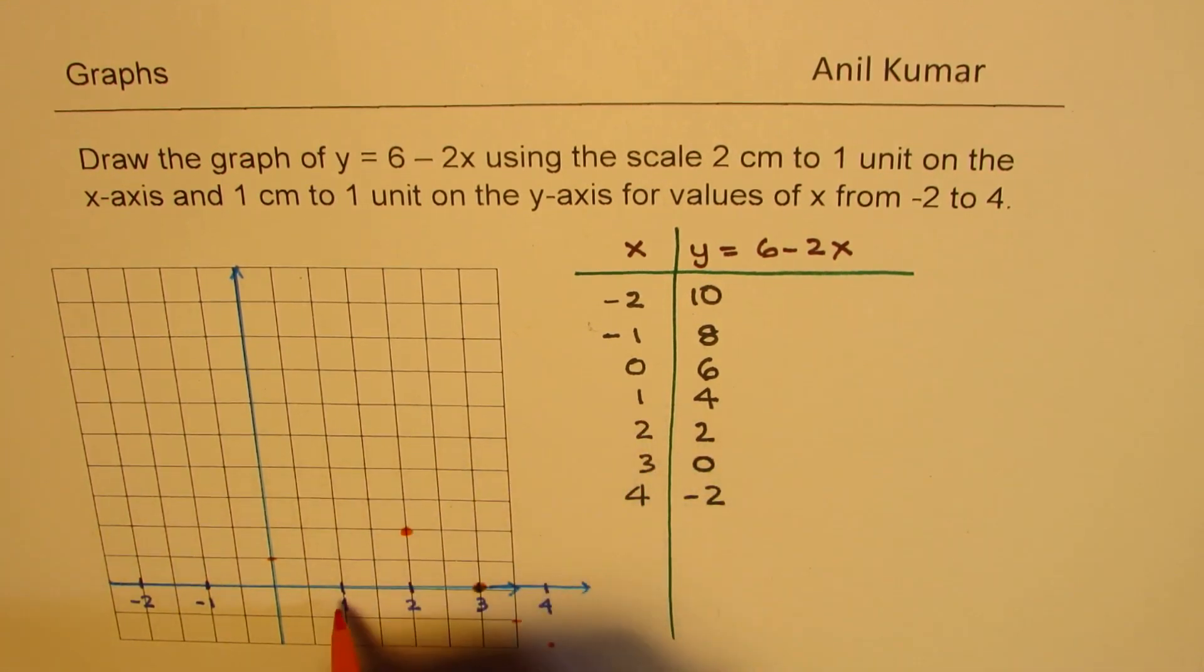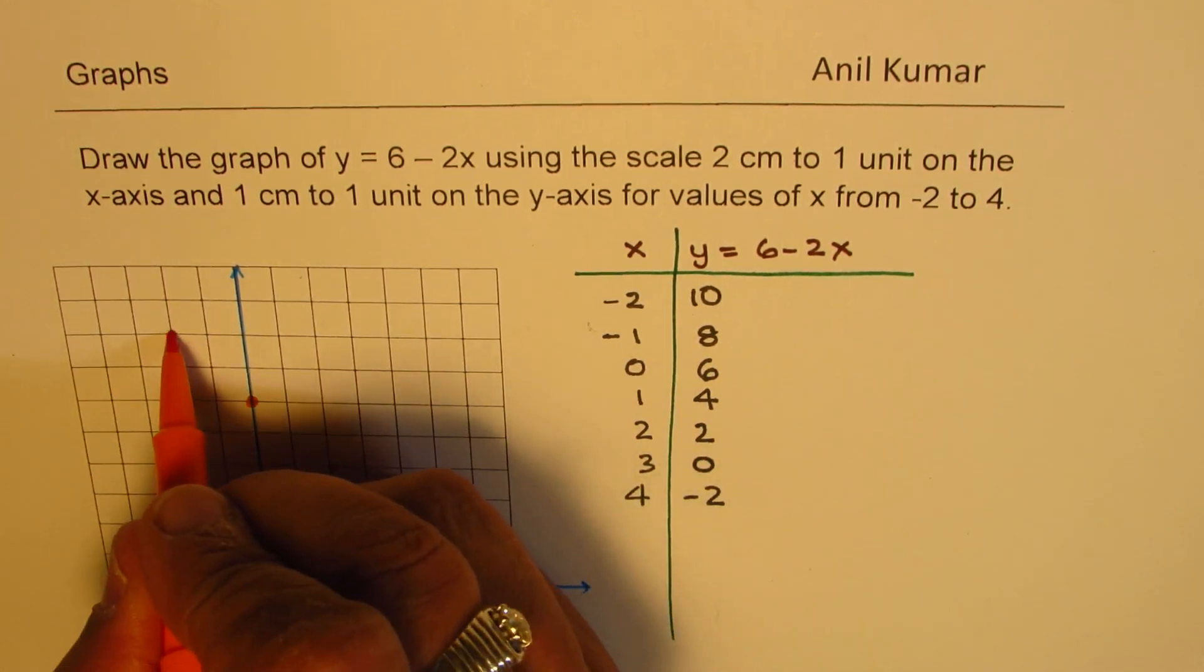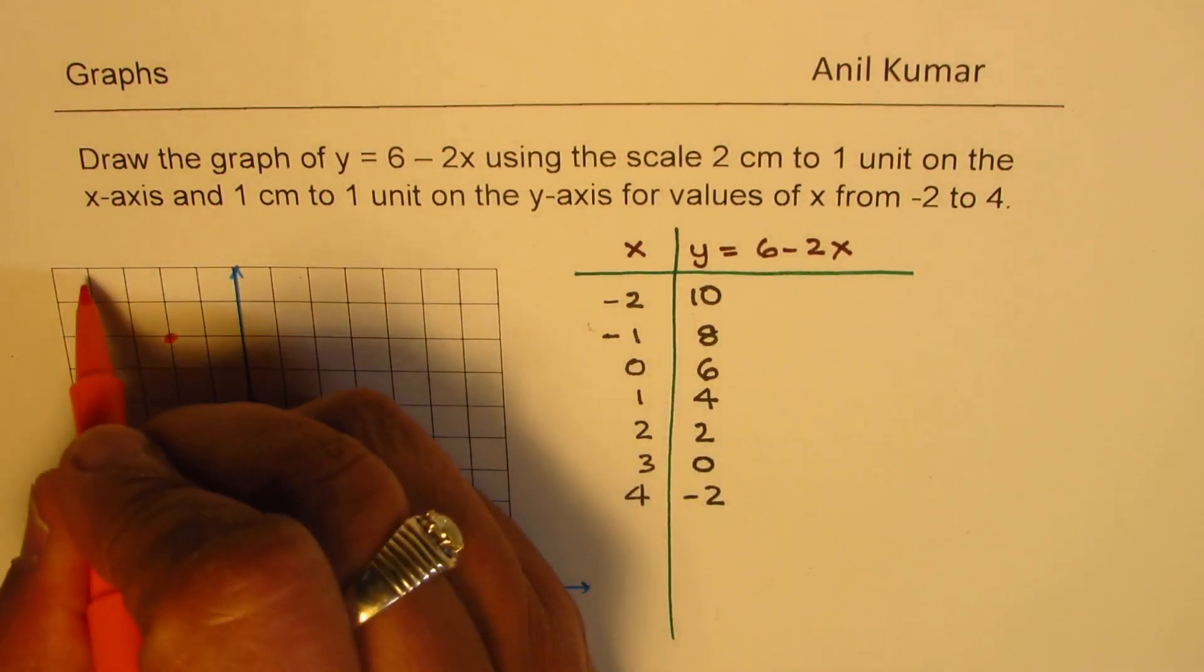At 1, it is 4. At 1, it is 4. At 0, it is 6. So at 0, it is 6. At minus 1, it is 8. And at minus 2, it is 10.